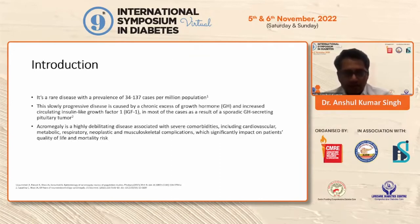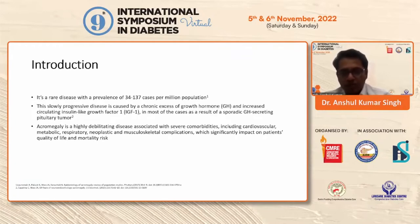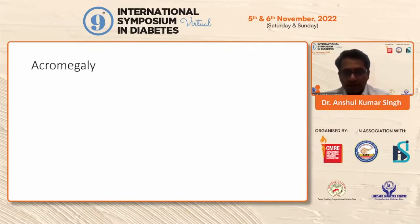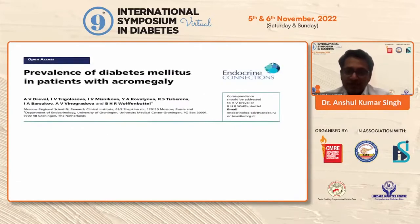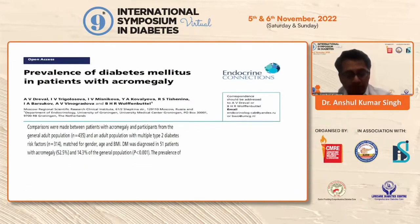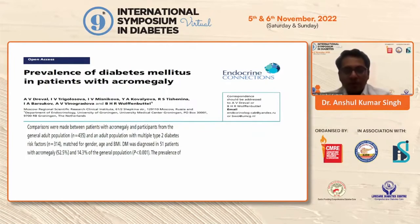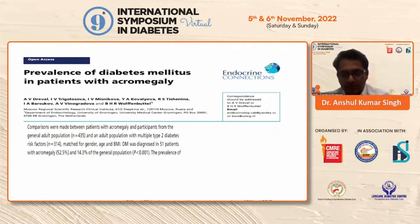Acromegaly is a slowly progressive disease with chronic excess of growth hormone. It is highly debilitating, with severe comorbidities which include cardiovascular, respiratory, and even increased neoplastic risks. The prevalence of diabetes in patients with acromegaly — in one study I was able to find — showed that around 52.5% of patients with acromegaly were diagnosed with diabetes, representing an increased risk compared to the normal population.